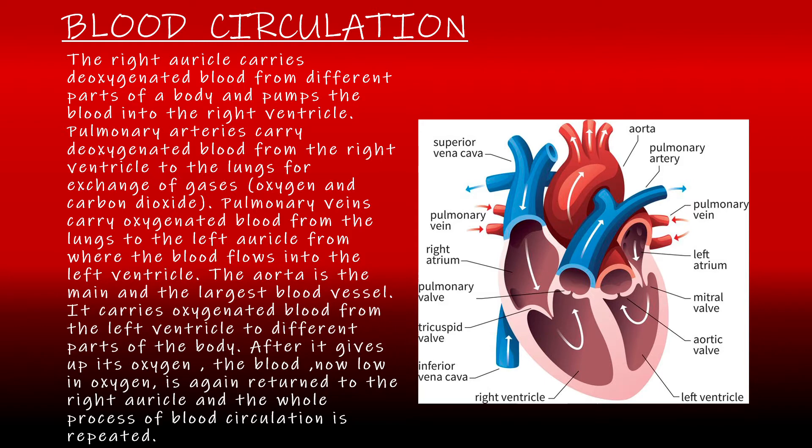Blood circulation: the right auricle carries deoxygenated blood from different parts of the body and pumps the blood into the right ventricle. Pulmonary arteries carry deoxygenated blood from the right ventricle to the lungs for exchange of gases, including oxygen and carbon dioxide. Pulmonary veins carry oxygenated blood from the lungs to the left auricle, from where the blood flows into the left ventricle.